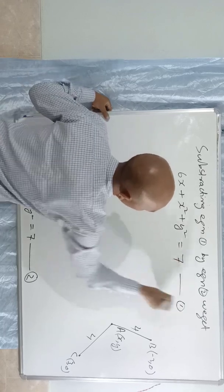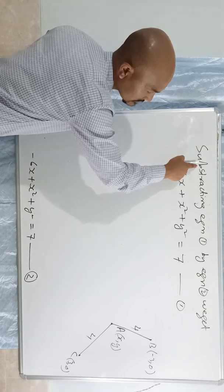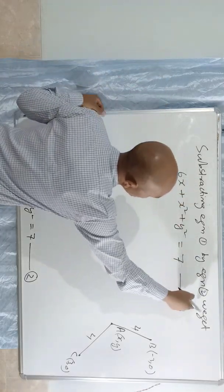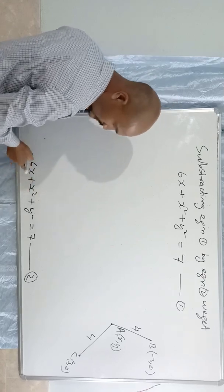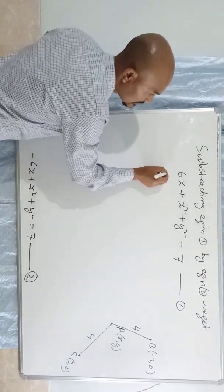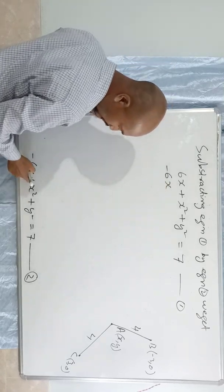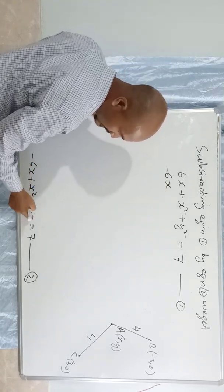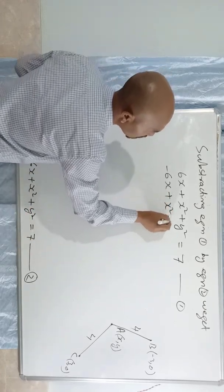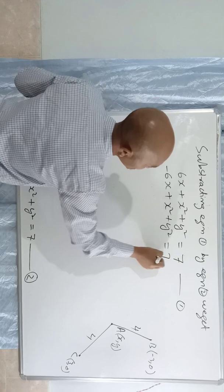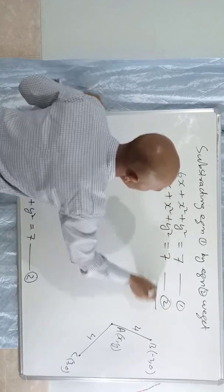That is equation number 1: 6x plus x² plus y² equals 7. And equation number 2: minus 6x plus x² plus y² equals 7. Now subtracting equation 1 by equation 2.